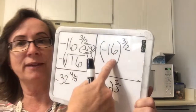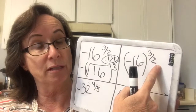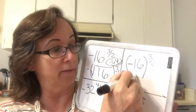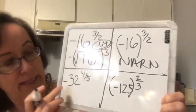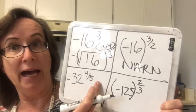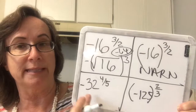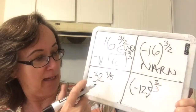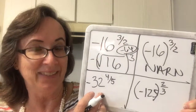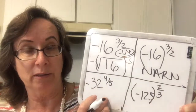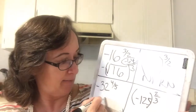Now I've got the negative inside the parenthesis with an even root. Therefore I have to say not a real number. Then I come down here — I've got an odd root and it is only applying to the 32, no parenthesis. So I take the fifth root of 32, which is 2, raise 2 to the 4th power to get 16, and then multiply by negative 1 to get negative 16.